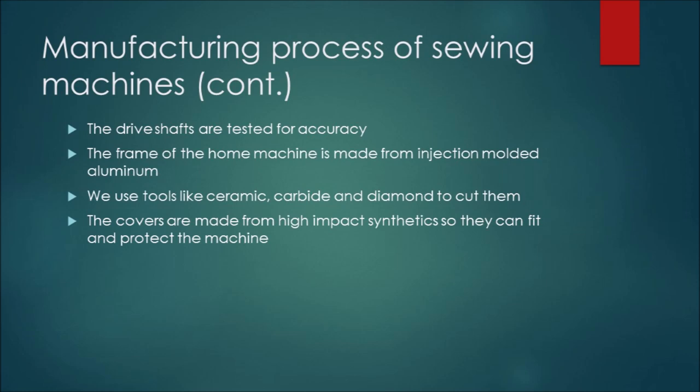The frame of the home machine is made of injection molded aluminum by using some cutting tools like ceramic, carbide, and diamond. The covers of the machine are made from high-impact synthetic. They are molded to fit and protect the machine. There are some other electronic parts which are made with high-speed robotics to make control of the machine.